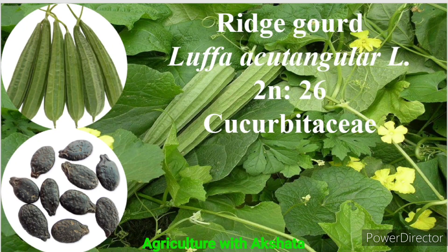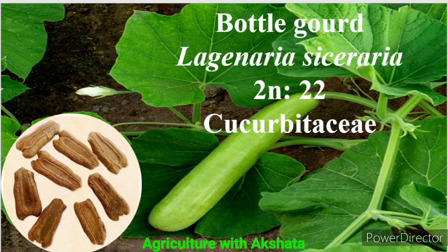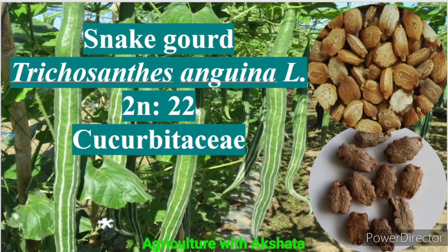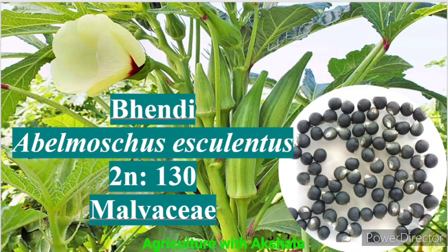Ridge gourd: Luffa acutangula, 2n = 26, Cucurbitaceae family. Sponge gourd: Luffa cylindrica, 2n = 26, Cucurbitaceae family. Bottle gourd: Lagenaria siceraria, 2n = 22, Cucurbitaceae family. Snake gourd: Trichosanthes anguina, 2n = 22, Cucurbitaceae family. Bitter gourd: Momordica charantia, 2n = 22, Cucurbitaceae family. Okra (Bhindi): Abelmoschus esculentus, 2n = 130, Malvaceae family.